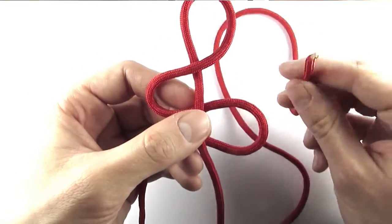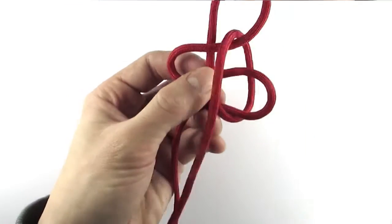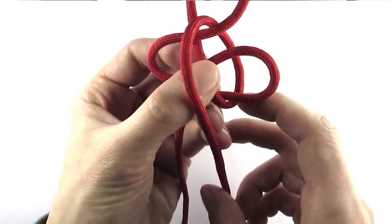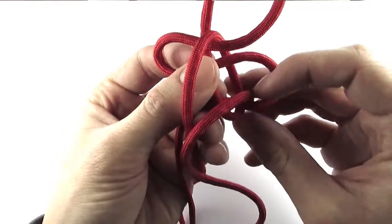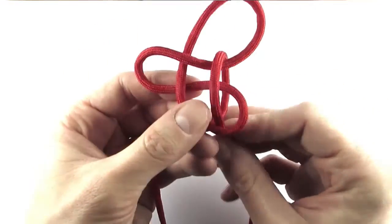We're going to feed it through the top loop and then through the bottom loop like this, and then just tighten the knot and we have our first cross knot.